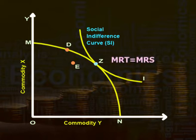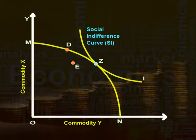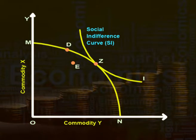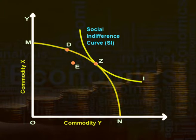Thus, point Z is the point where MRT equals MRS. To understand welfare maximization, here in this figure we can see the social indifference curve is tangent to the grand utility frontier at point Z. This point is the point of constraint bliss. Social welfare is maximum only at a point where both production efficiency and consumption efficiency coincide, that is MRT equals MRS. Here, MN is the grand utility frontier and curve I is a social indifference curve. Point Z is the point of constraint bliss, thus social welfare is maximum at this point.